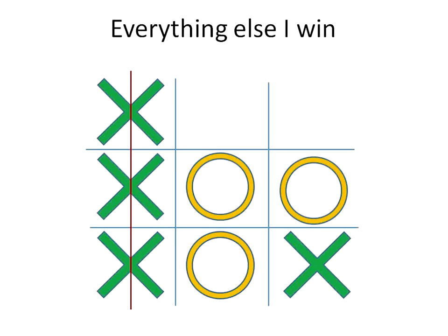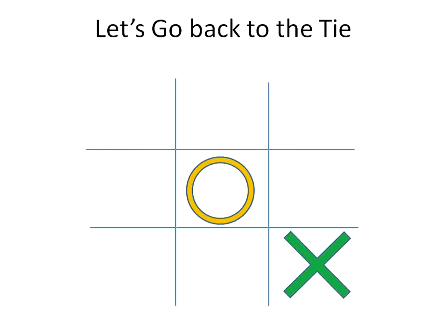Just pick a corner, let them pick anything else. Again, if they pick the middle, the one time that it can end in a tie is if they pick the middle, and basically you're going to go across from them. So you pick this side, he picks the middle, you go across from the middle.